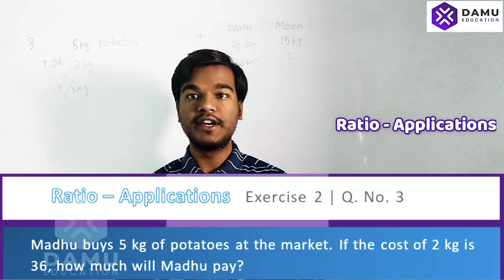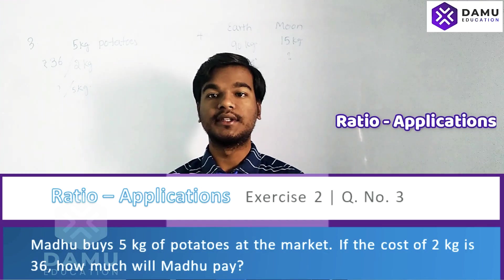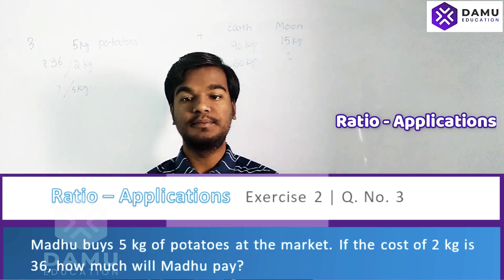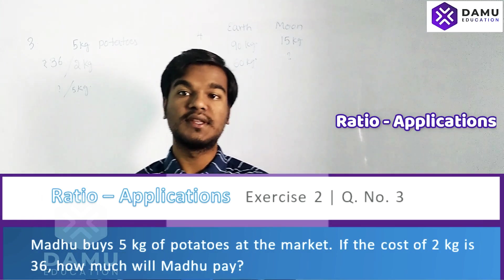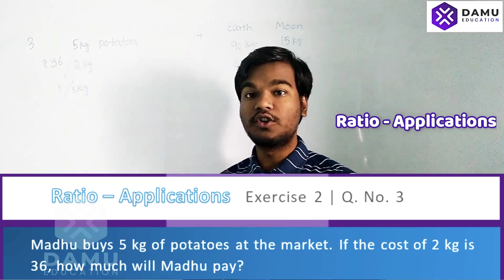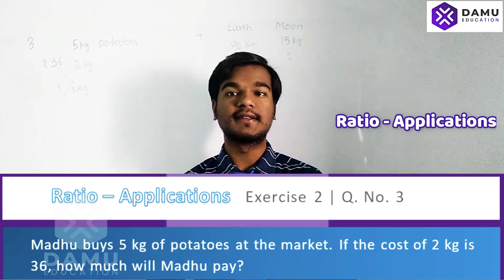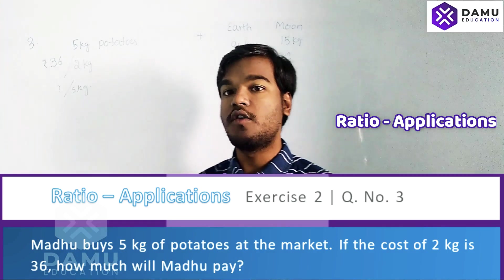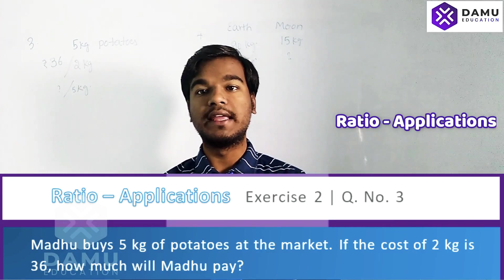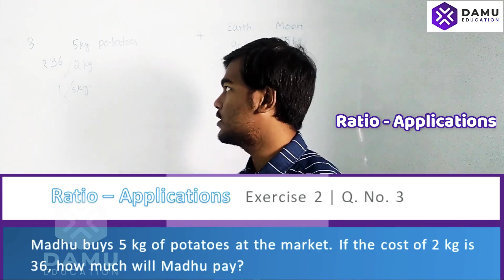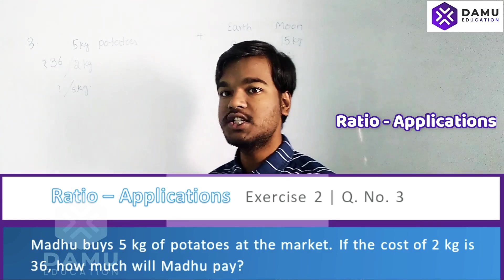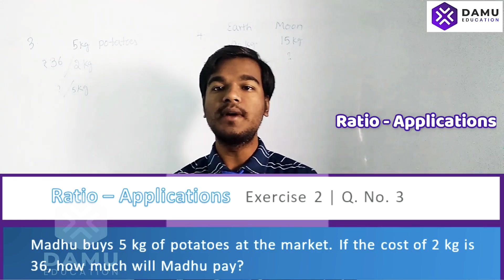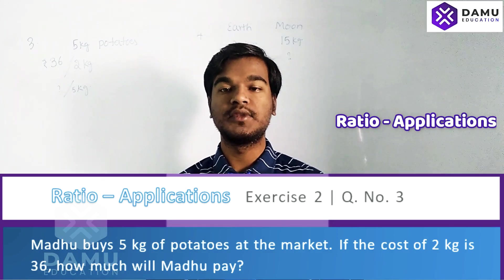Hello viewers, thanks for watching our videos. If you have not yet subscribed, please subscribe and give a thumbs up. So here our third question in Exercise 2 is: Madhu buys 5 kg of potatoes in the market. After that, she paid 36 rupees per 2 kg. How much does she have to pay for 5 kg?